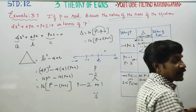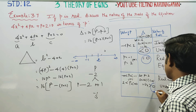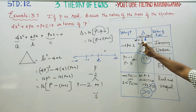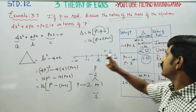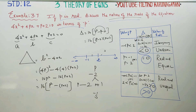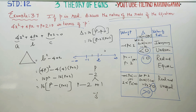This is the main result: when delta is less than 0, roots are imaginary; when delta equals 0, roots are real and equal; when delta is greater than 0, roots are real and unequal. For different values of p, we get different natures of roots. This is the correct representation of this problem. Thank you.